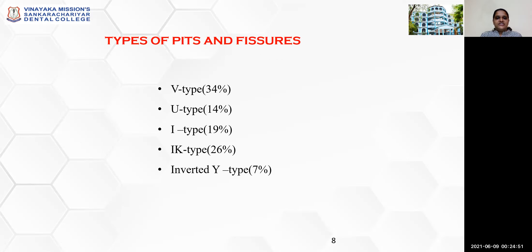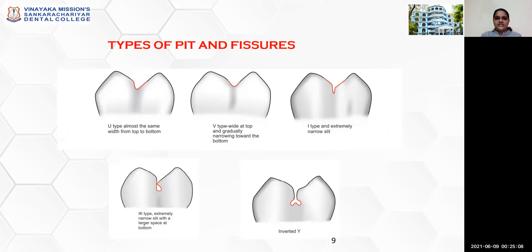The types of pit and fissure include V type which constitutes 35% of individuals, U type 14%, I type 19%, IK type 26%, and inverted Y type 4.7% of children. U type is almost the same width from top to bottom; V type is wide at the top and gradually narrowing towards the bottom; I type is an extremely narrow slit; IK type has an extremely narrow slit with a large space at the bottom.